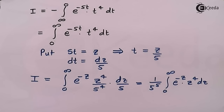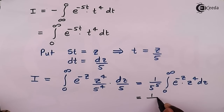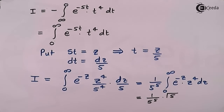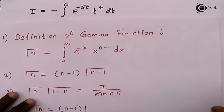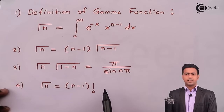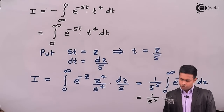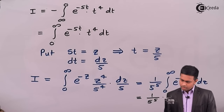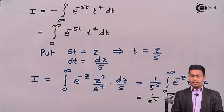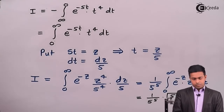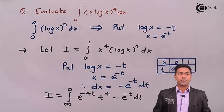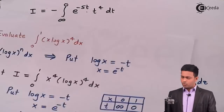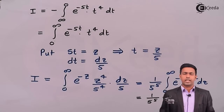This exactly matches the definition of gamma function. The power of z is 4, so inside gamma we get 5, giving gamma(5). Using the property gamma(n) equals (n minus 1) factorial, gamma(5) equals 4 factorial. Therefore, the value of the integration from 0 to 1 of x·log(x) whole raised to 4 dx equals 4 factorial upon 5 raised to 5, solved using the definition and properties of gamma function.